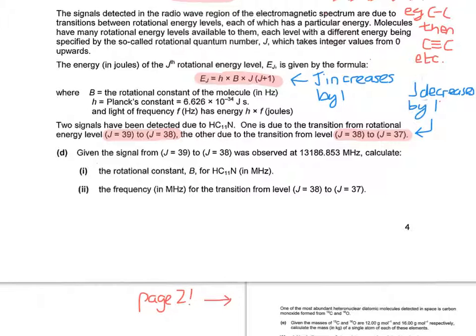It says two signals have been detected due to HC11N, the molecule we've just drawn. One is due to the transition from rotational energy level j equals 39 to j equals 38. The other due to transition level j equals 38 to j equals 37. So you can see they're pointed at those two, and said that j decreases by 1 in both cases. But the formula we're given is j increases by 1, doesn't decrease by 1. So how do we do it for one where it decreases by 1?